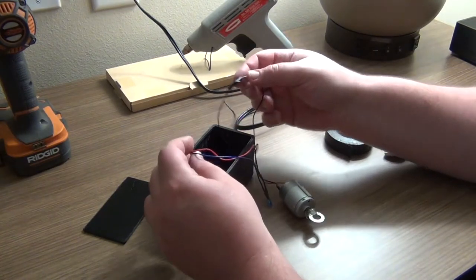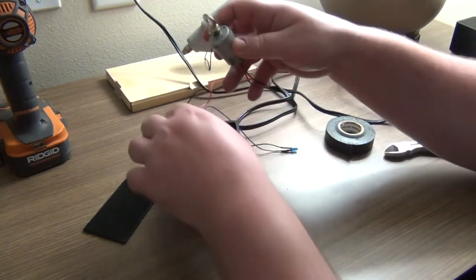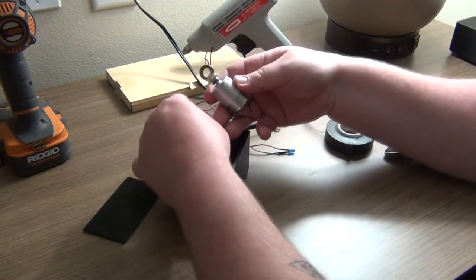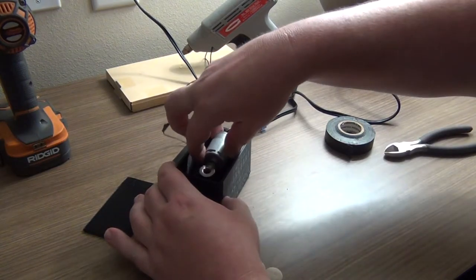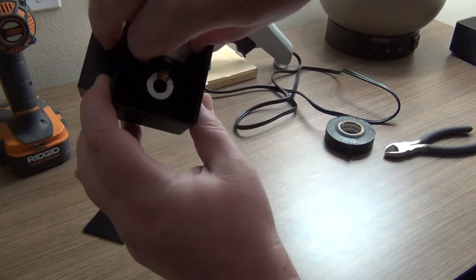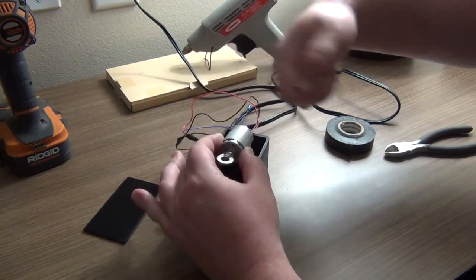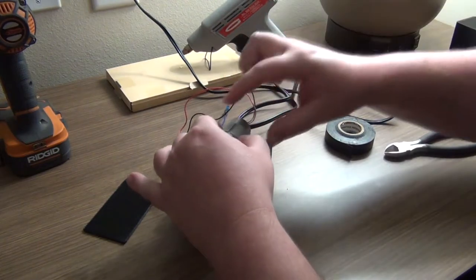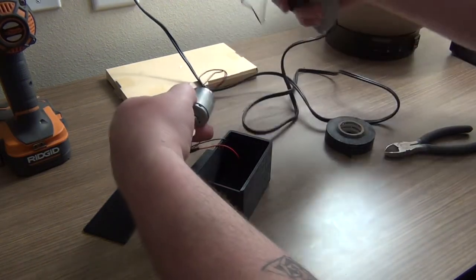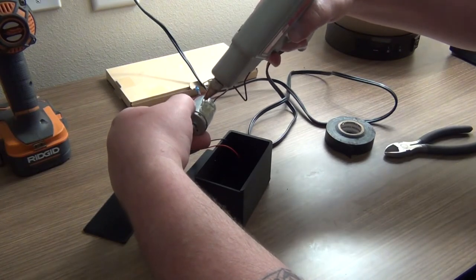Now that we're all taped up, we want to secure our motor in the bottom of our box. You simply do that by hot gluing the bottom. Placing it so it has enough clearance. So you can see there. And then I usually put some hot glue over the top to make sure and down the sides to make sure it stays put.